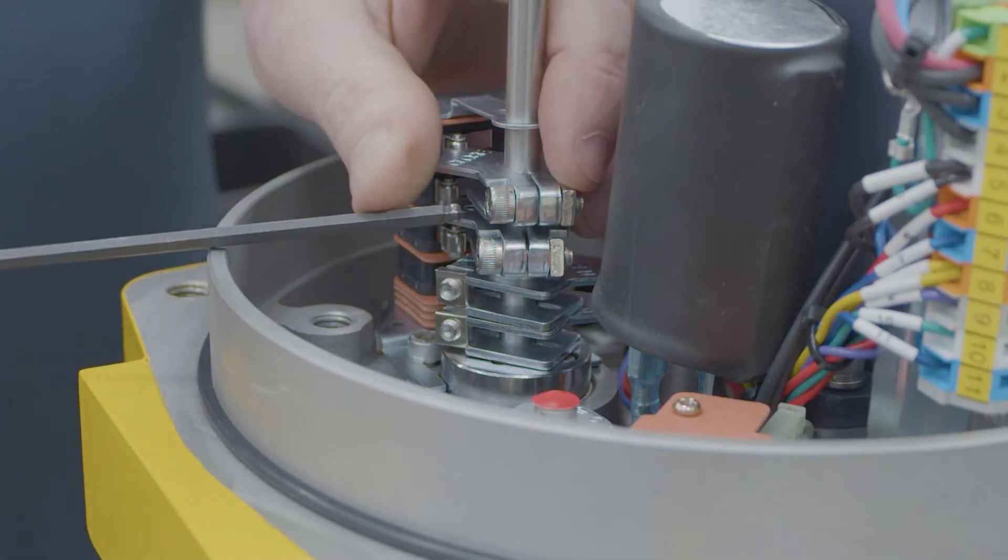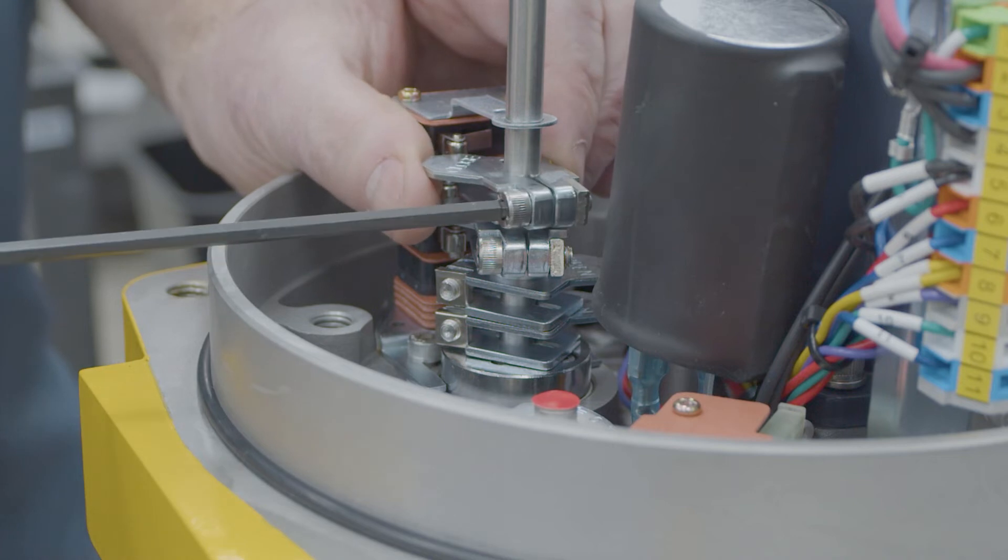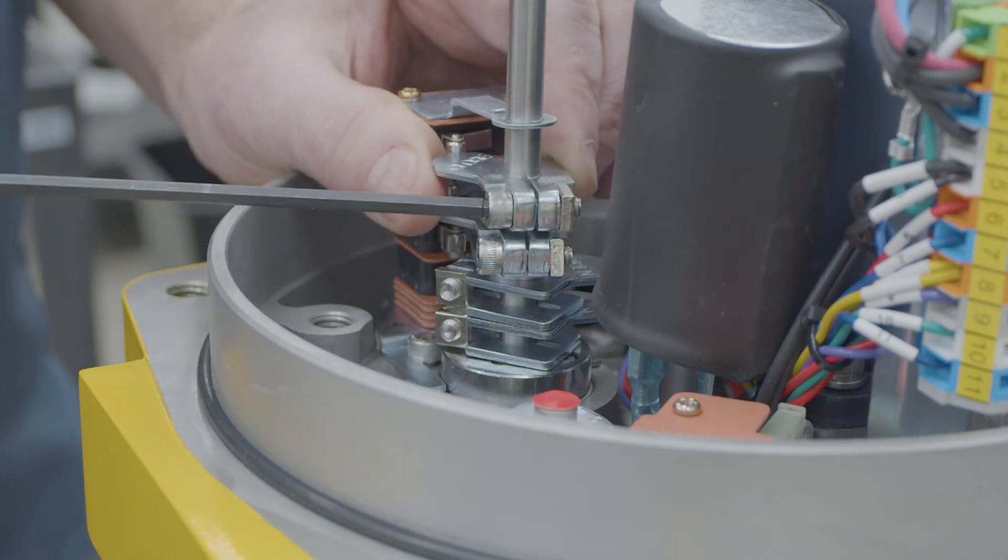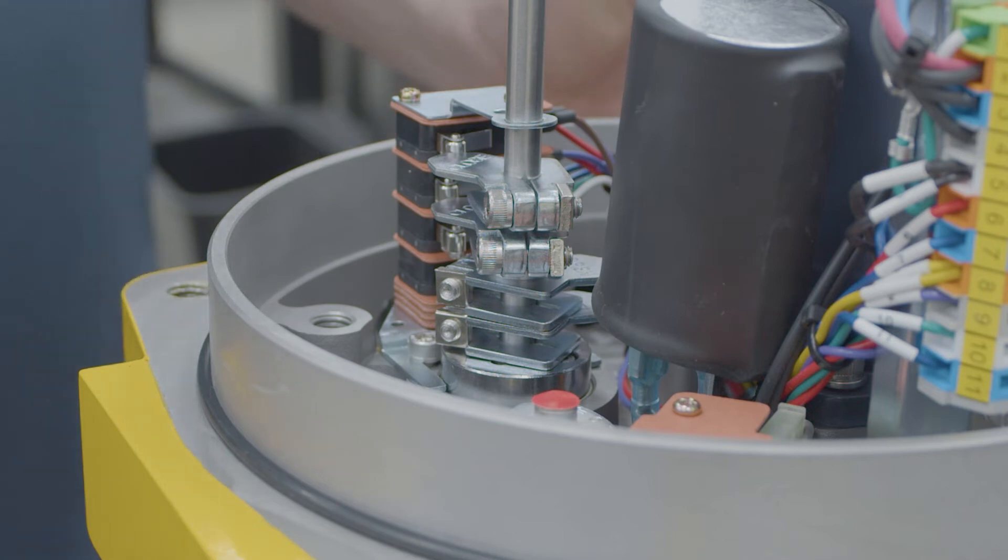If you need to adjust it to achieve the position where you want it, all you do is loosen that, slide it to wherever you want it to be, tighten it back down, and then now set your stops.